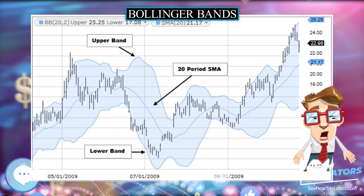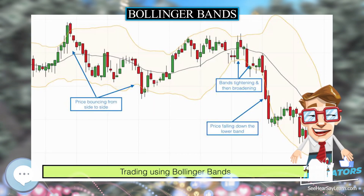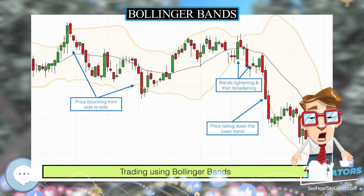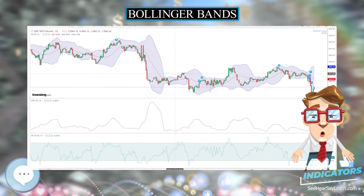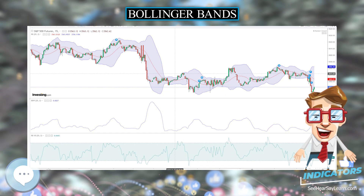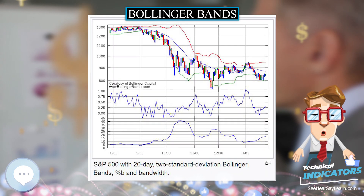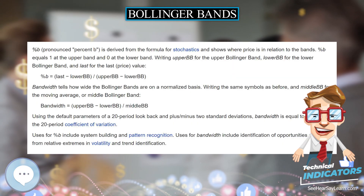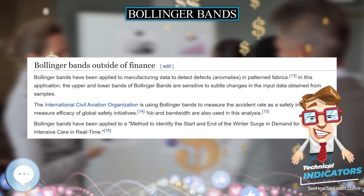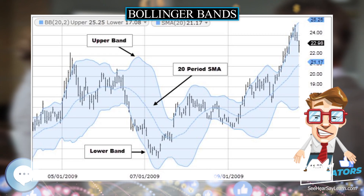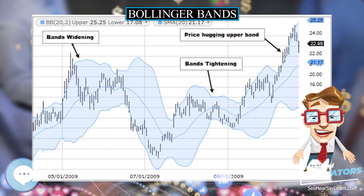When the bands lie close together, a period of low volatility is indicated. Conversely, as the bands expand, an increase in price action and market volatility is indicated. When the bands have only a slight slope and track approximately parallel for an extended time, the price will generally be found to oscillate between the bands as though in a channel. Traders are often inclined to use Bollinger Bands with other indicators to confirm price action, coupling oscillator-like Bollinger Bands with a non-oscillator indicator like chart patterns or a trend line.